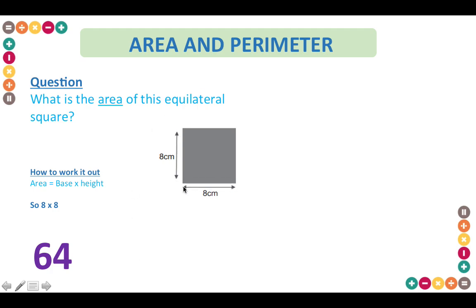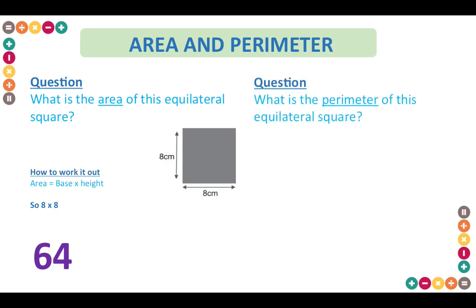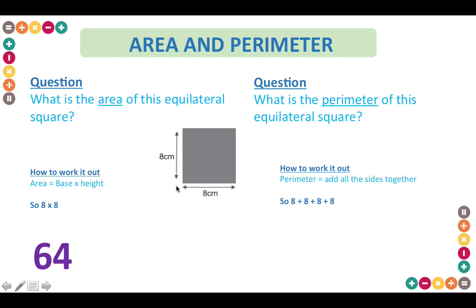If you were asked to find the perimeter of the square, all you need to do is add all of the sides. So 8 plus 8 plus 8 plus 8 — because there are four sides — gives you the answer of 32.